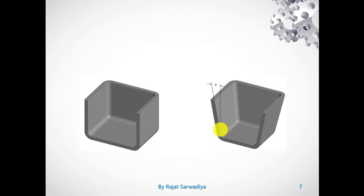For easy removal of our pattern from the dies or from the molds, we provide some taper to the walls of our component — just for easy removal — whether it is your casting component, forging component, or plastic components using injection molding processes. That taper is, in technical terms, called the draft. We will see the same draft using CATIA V5. Before going for draft, there are some initial things required.